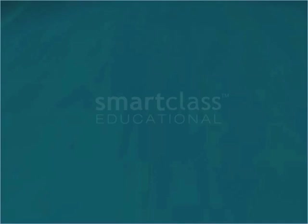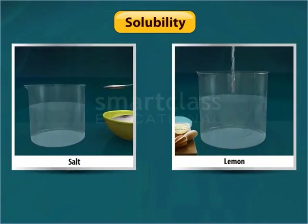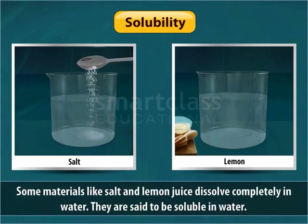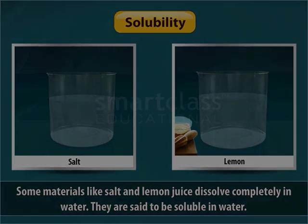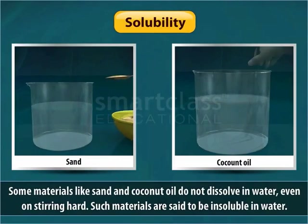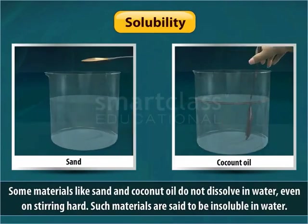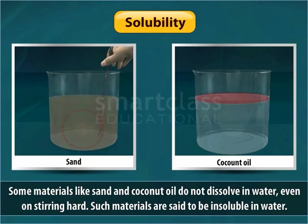The next property is solubility. Let's try to dissolve a few materials in water. Some materials like salt and lemon juice dissolve completely in water. They are said to be soluble in water. On the other hand, some materials like sand and coconut oil do not dissolve in water, even on stirring hard. Such materials are said to be insoluble in water.